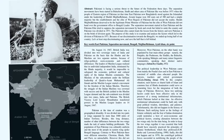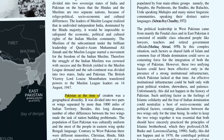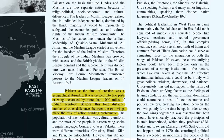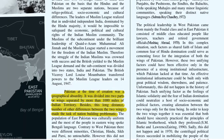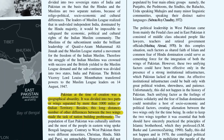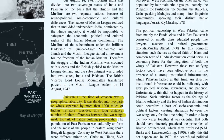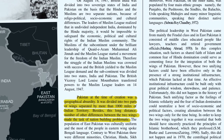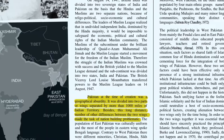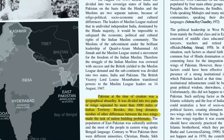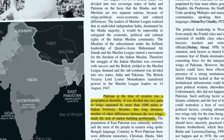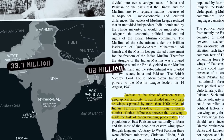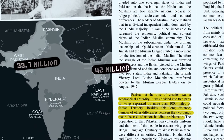East Bengal becoming part of Pakistan proved to be a major issue, as half of its citizens in the newly formed nation were on the other side of India. According to the 1951 census, the dominion of Pakistan — both East and West Pakistan — had a population of 75 million people, in which West Pakistan had a population of 33.7 million and East Pakistan had a population of 42 million.